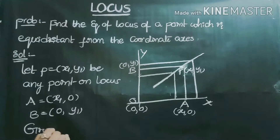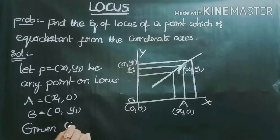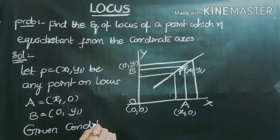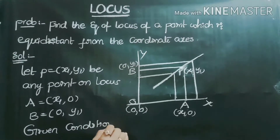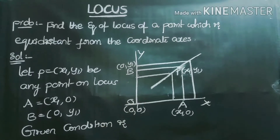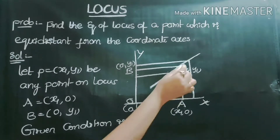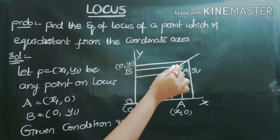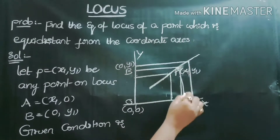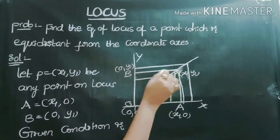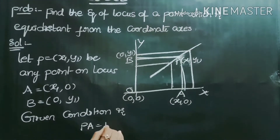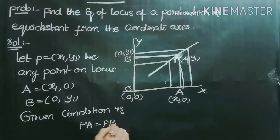Now we write the given condition. The given condition is that the point is equidistant from the coordinate axes, meaning the two distances are equal: PA = PB.